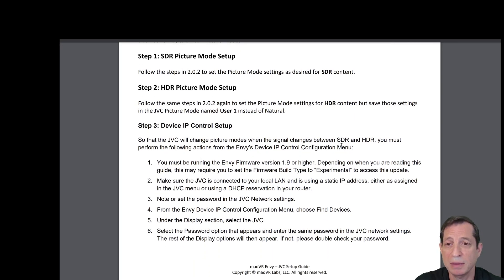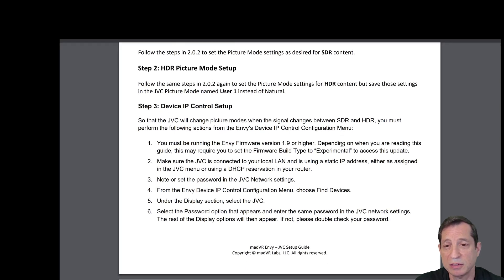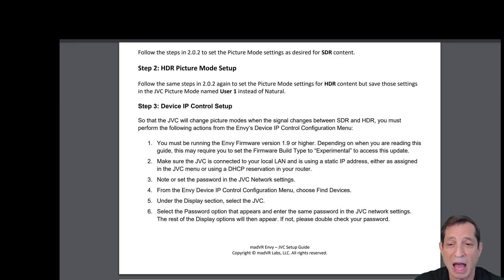The first step is to set your SDR picture mode. Follow the steps that we covered in the previous section, and you're going to wind up saving those into a picture mode called Natural. You're going to set that up exactly how you want for SDR content. Then in Step 2, we're going to do the same thing except this time tailor the settings to how you want them for HDR content. When you're done, save them in the JVC picture mode named User 1 instead of Natural, which is where you will have saved your SDR settings.